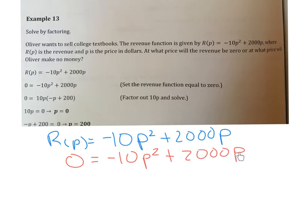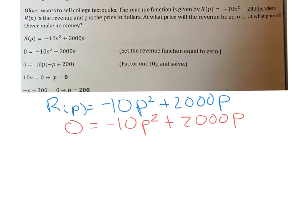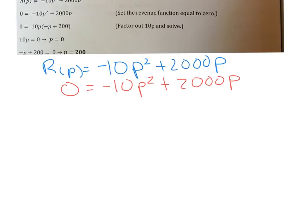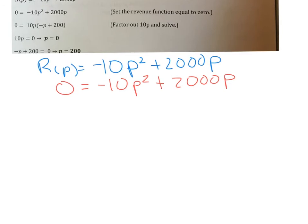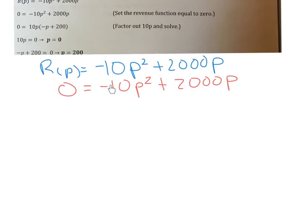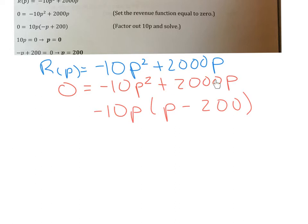Looking at this, we factor out a GCF first. That negative sign means we'll factor out a negative as part of our GCF, because we want the lead coefficient to be positive. The GCF is negative 10p. Factoring that out leaves p minus 200. Dividing by negative 10 changes the sign, and taking off 10 leaves 200, with p factored out.